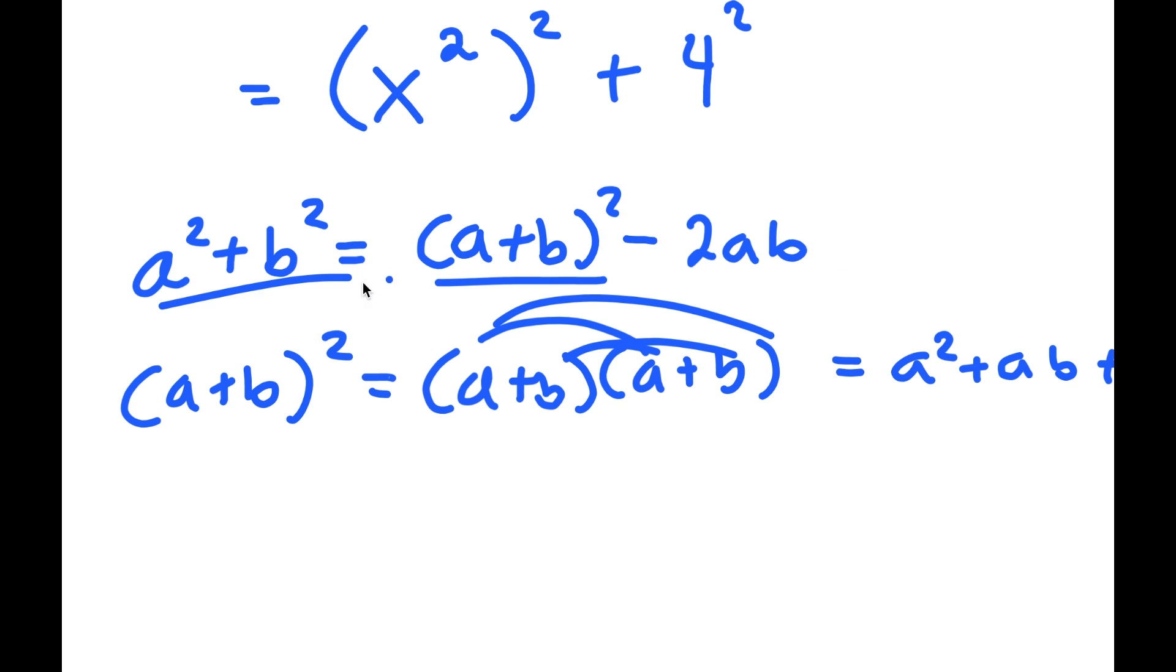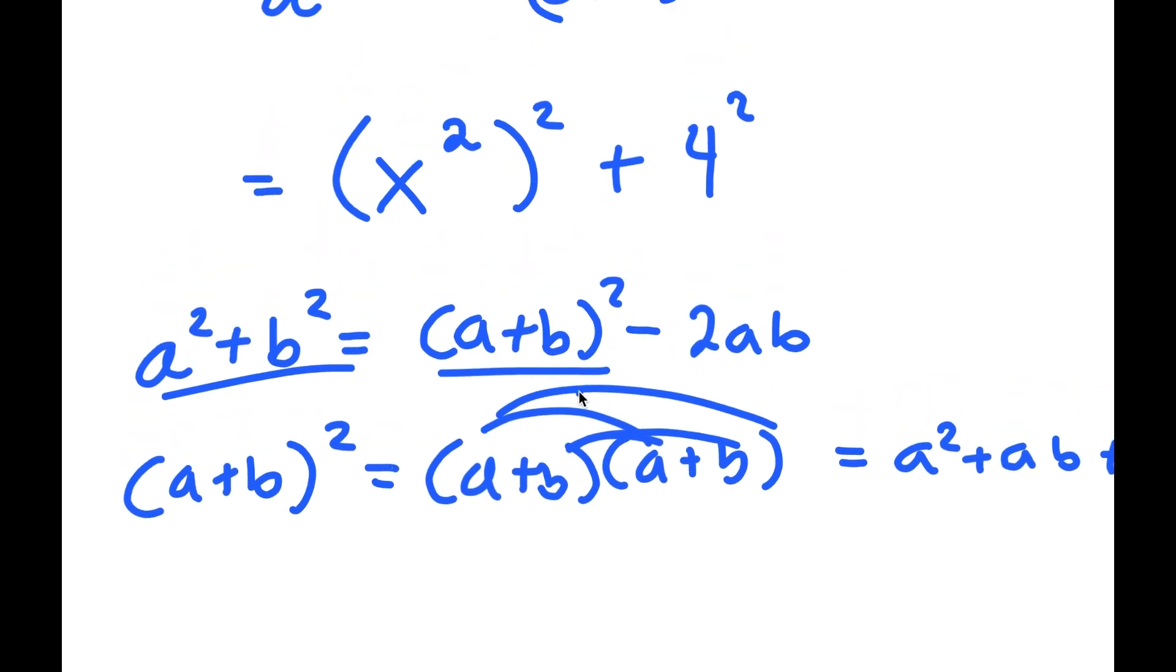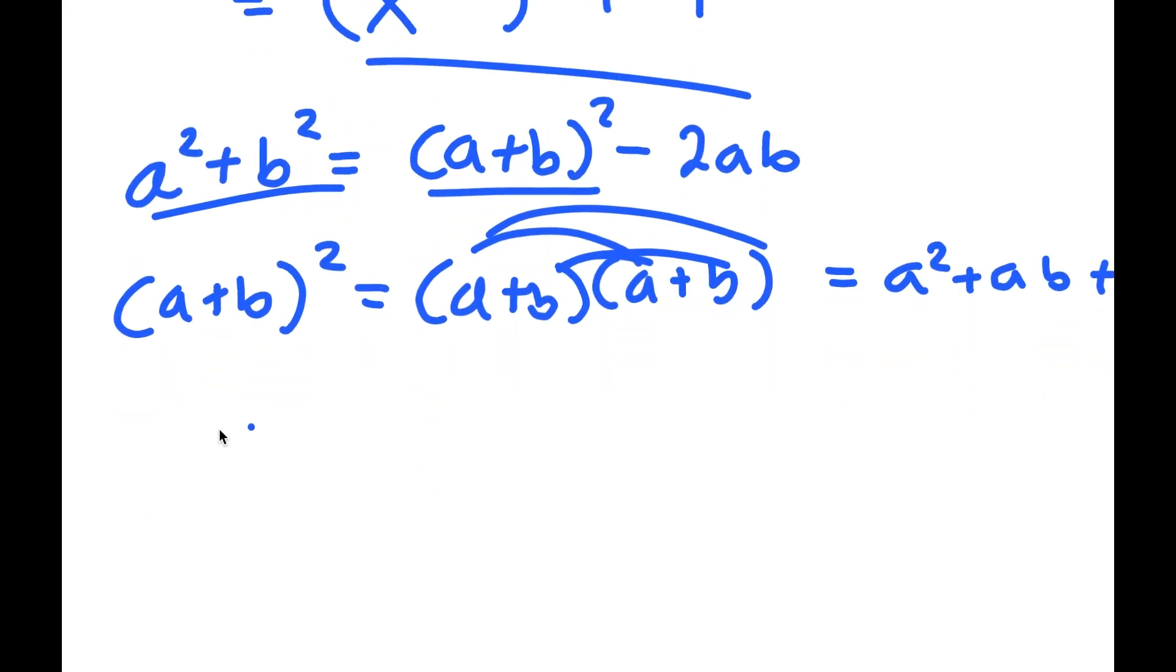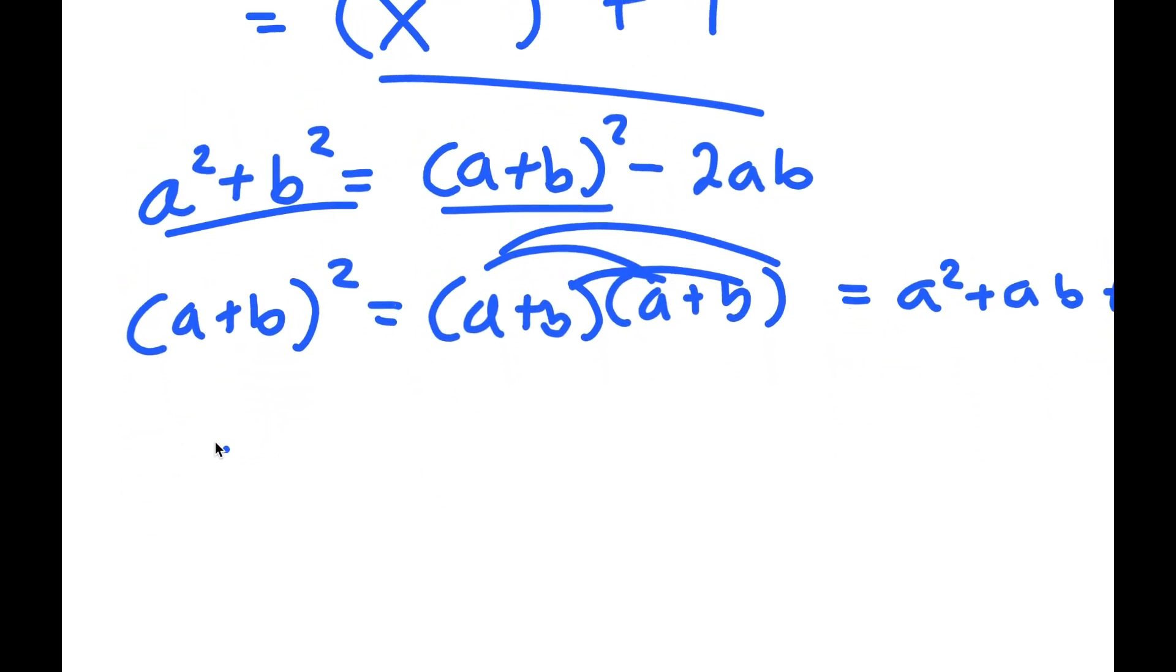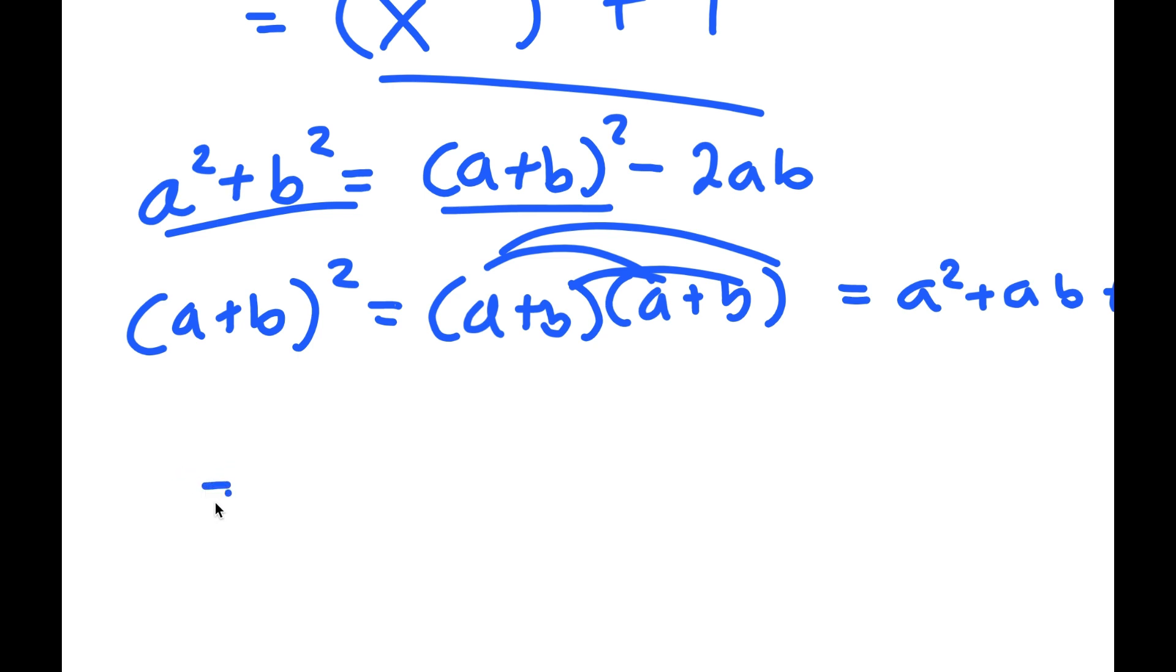So if you subtract the 2ab, all that's left is a squared plus b squared. This means that x squared squared plus 4 squared is the same thing as x squared plus 4 squared, minus 2ab, which is 2 times x squared times 4.